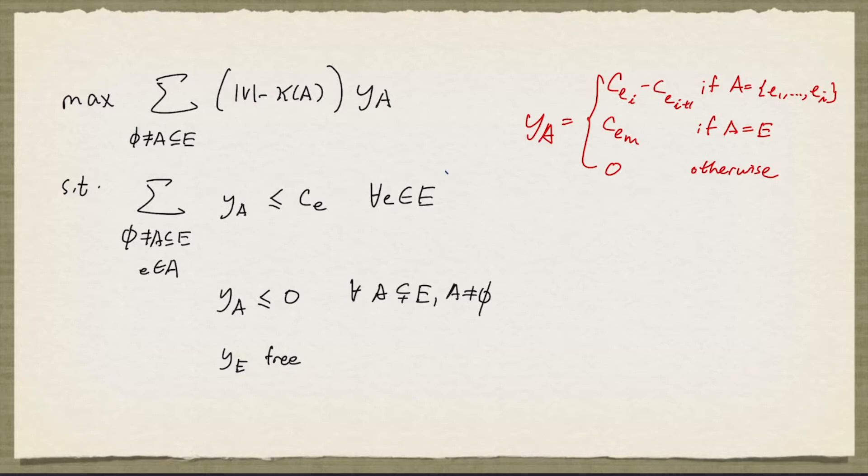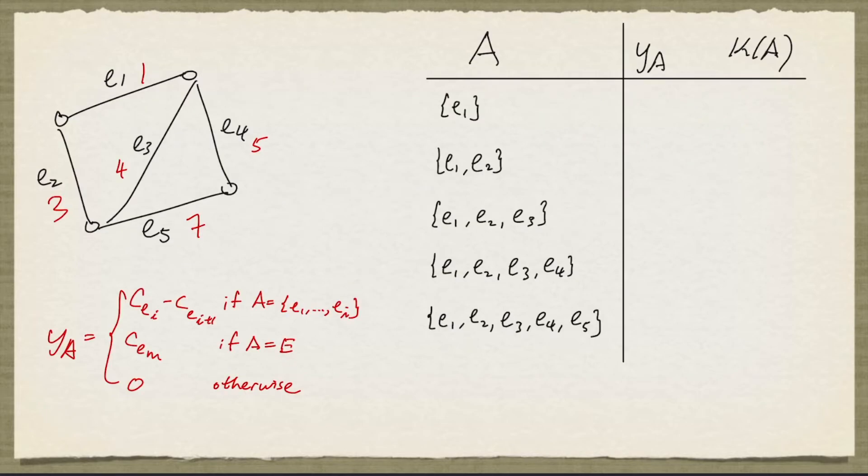One can easily check that all these constraints are satisfied by this constructed y. And now let us look at an example illustrating this construction. So here, the edge weights are given by the numbers in red.